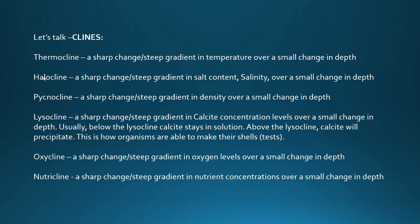We also have a nutricline, which is a sharp change — steep gradient in the nutrient concentration, be it nitrates, phosphates, etc. — over a small change in depth. Usually if you have a sharp change in oxygen levels forming an anoxic region, you're not going to find nutrients in that anoxic water layer and there won't be any productivity, no life forms that require oxygen. You may find methanogens — bacteria that love methane.